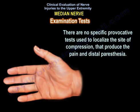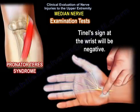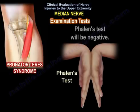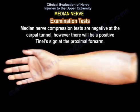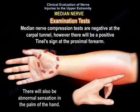There are no specific provocative tests used to localize the site of compression that produce pain and distal paresthesia. In pronator syndrome, Tinel sign at the wrist will be negative, Phalen test will be negative, and median nerve compression tests are negative at the carpal tunnel. However, there will be a positive Tinel sign at the proximal forearm, and there will be abnormal sensation in the palm of the hand.